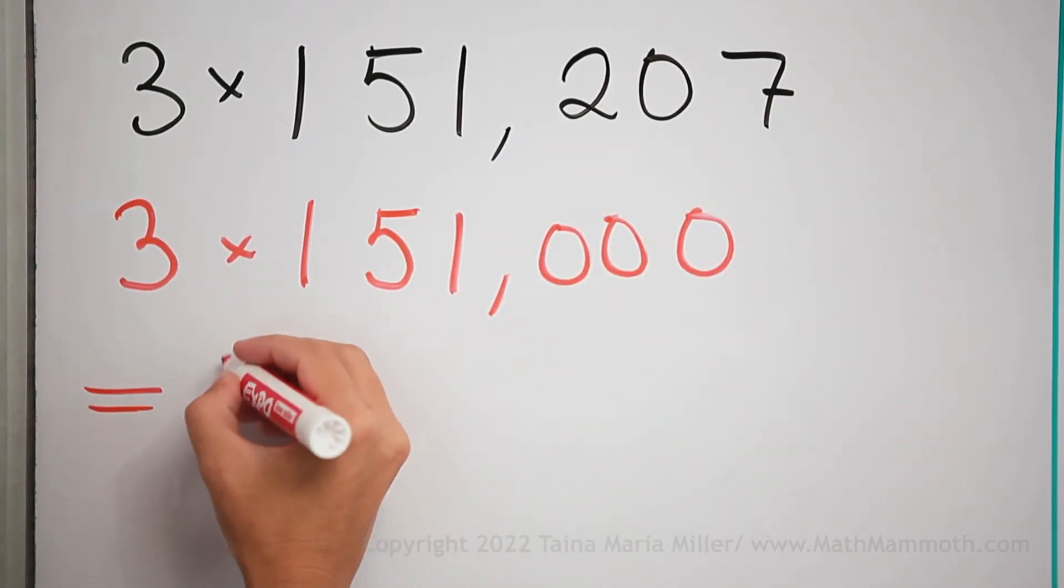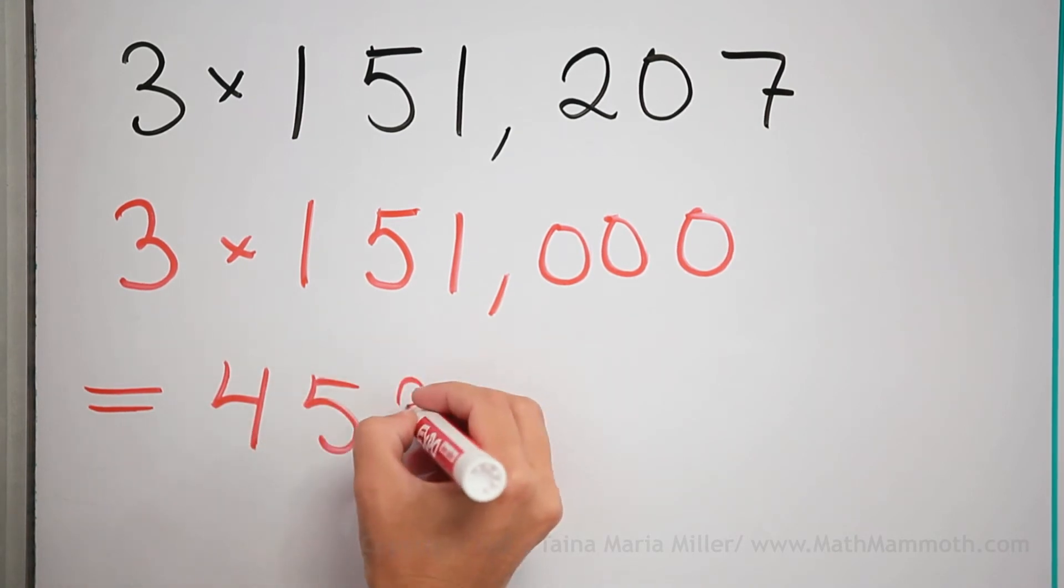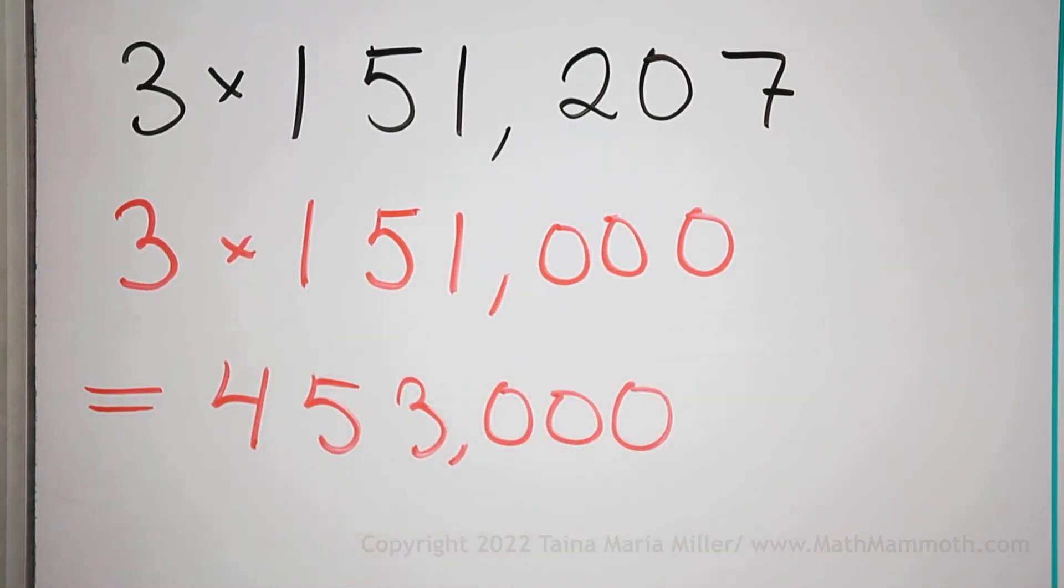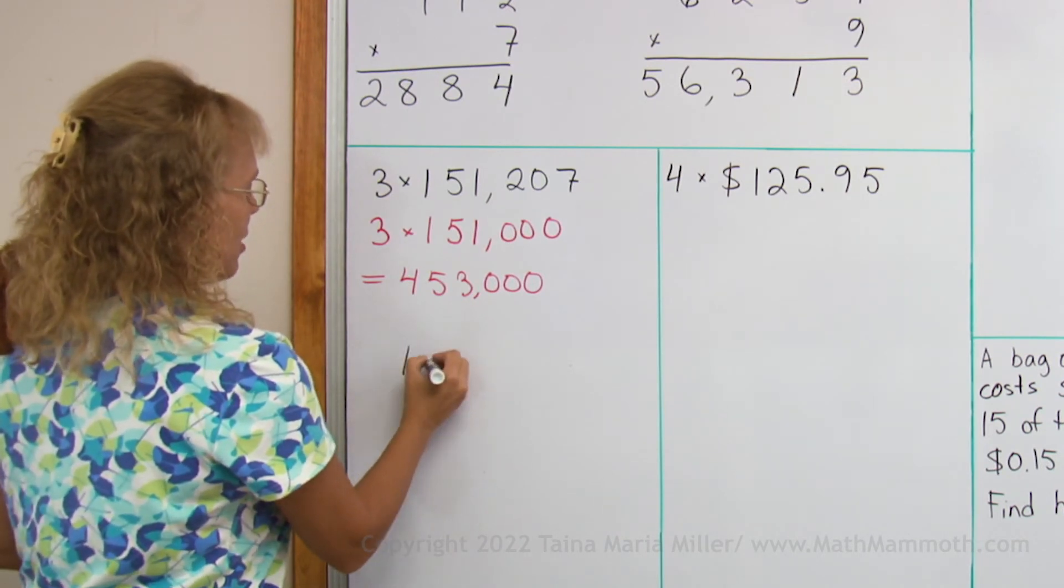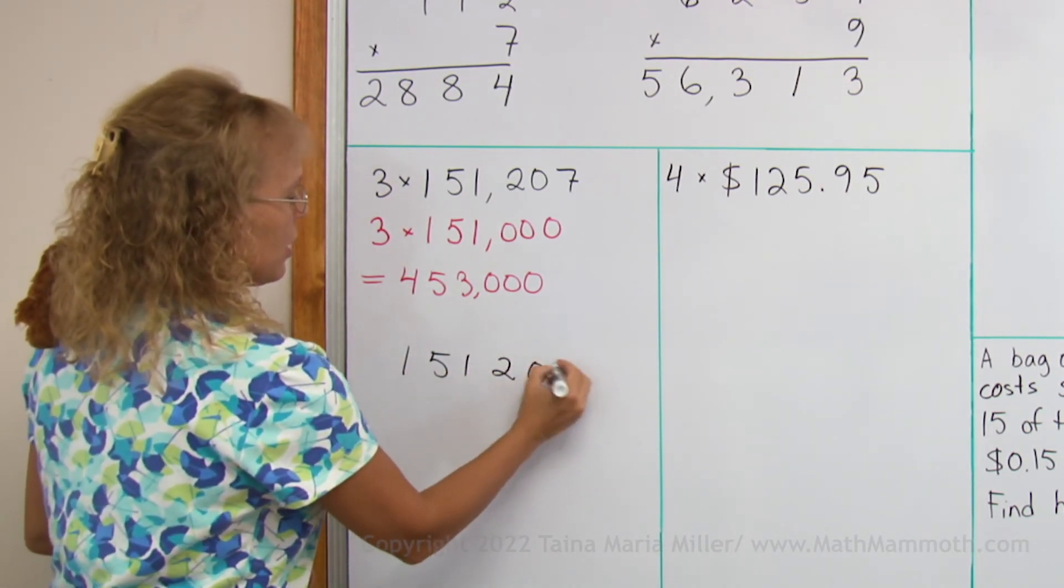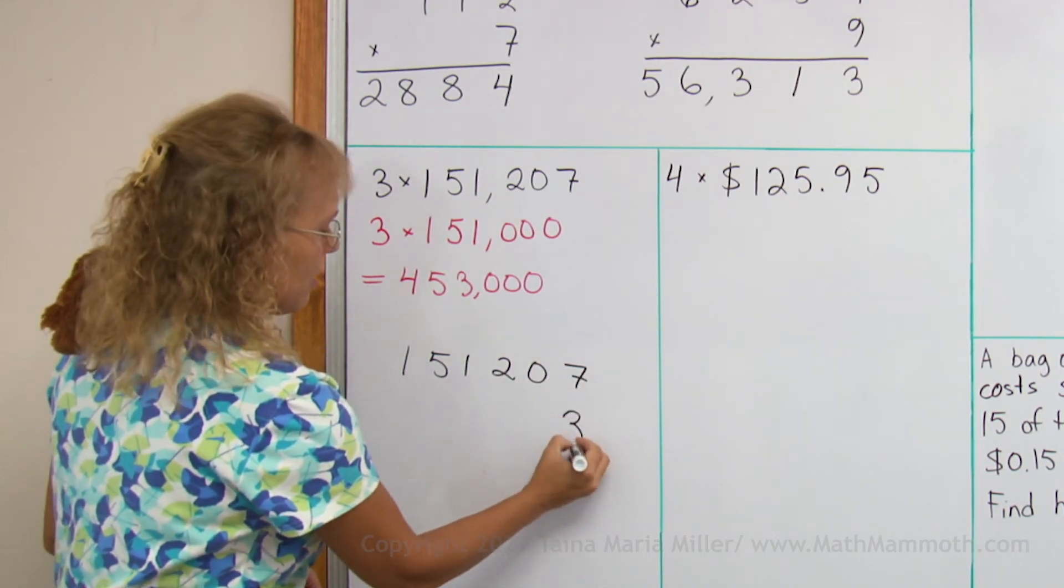And so I get 453,000. That is my estimate for this multiplication problem. And now the multiplication, that's 151,207 times 3.